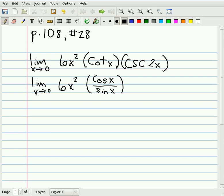And the cosecant of 2x can be written as 1 over the sine of 2x.